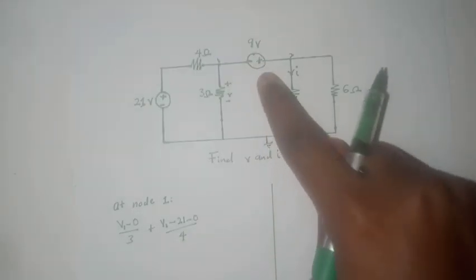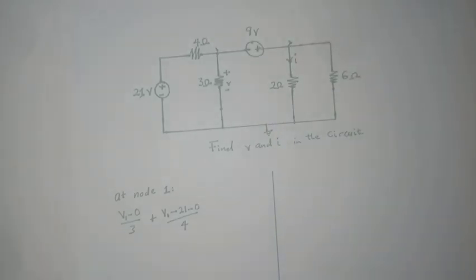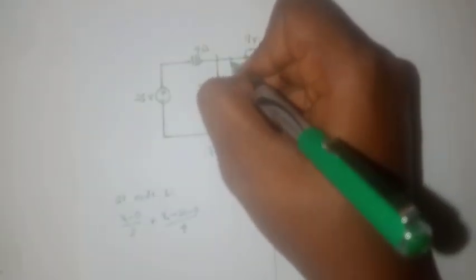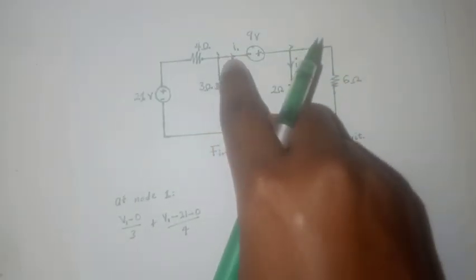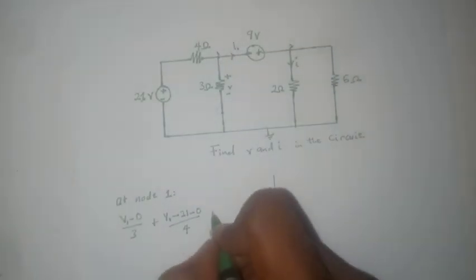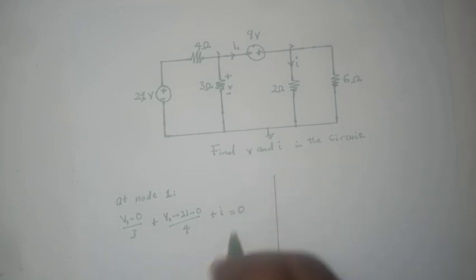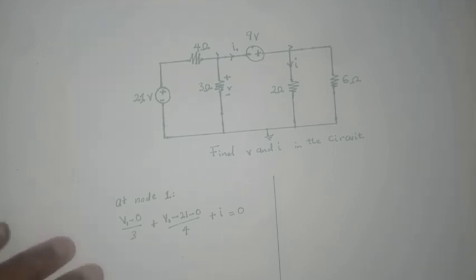Then we come to this branch. What you notice is that there is no resistance in this branch so it is quite a bit difficult to write the current flowing into the branch. So what we do is we assign a current to the branch, let's call that current i1, and since the current is leaving we make it positive. So plus i1 equals zero.